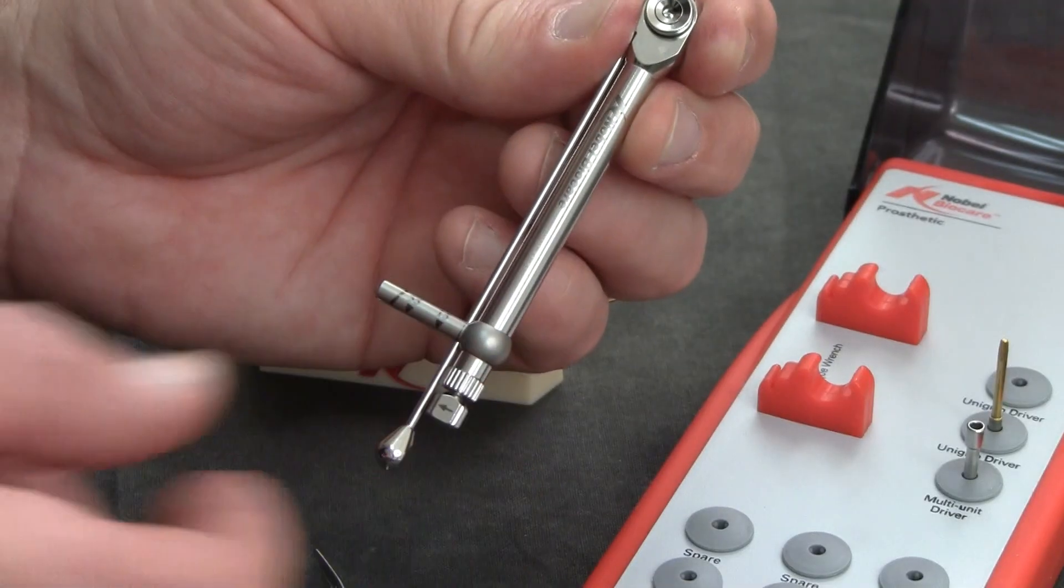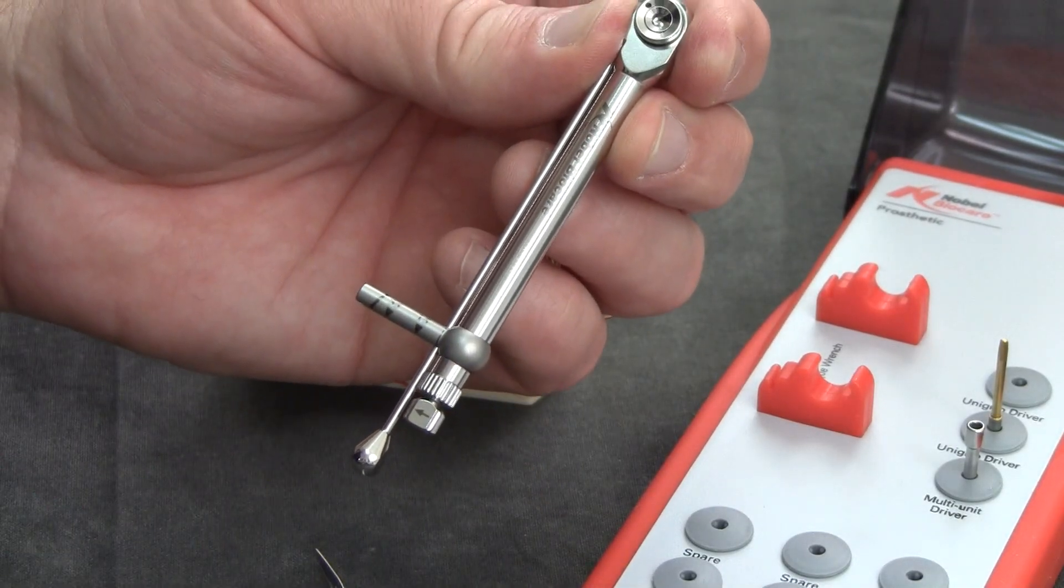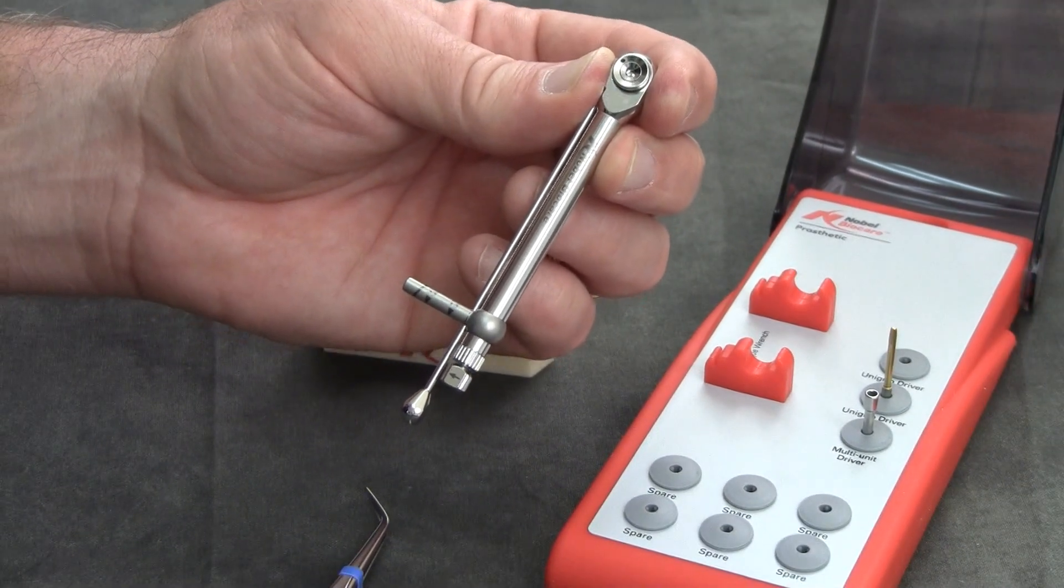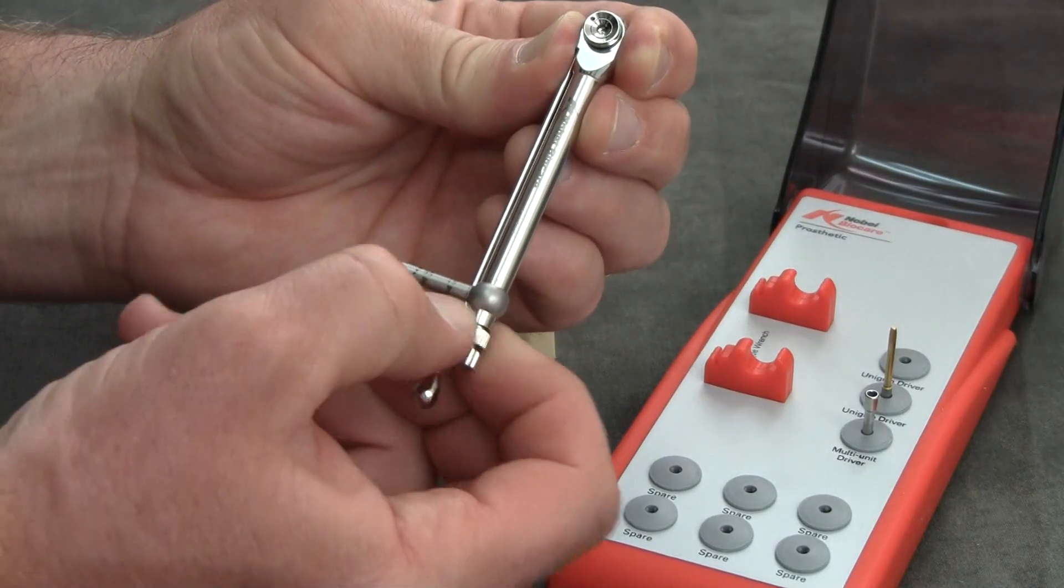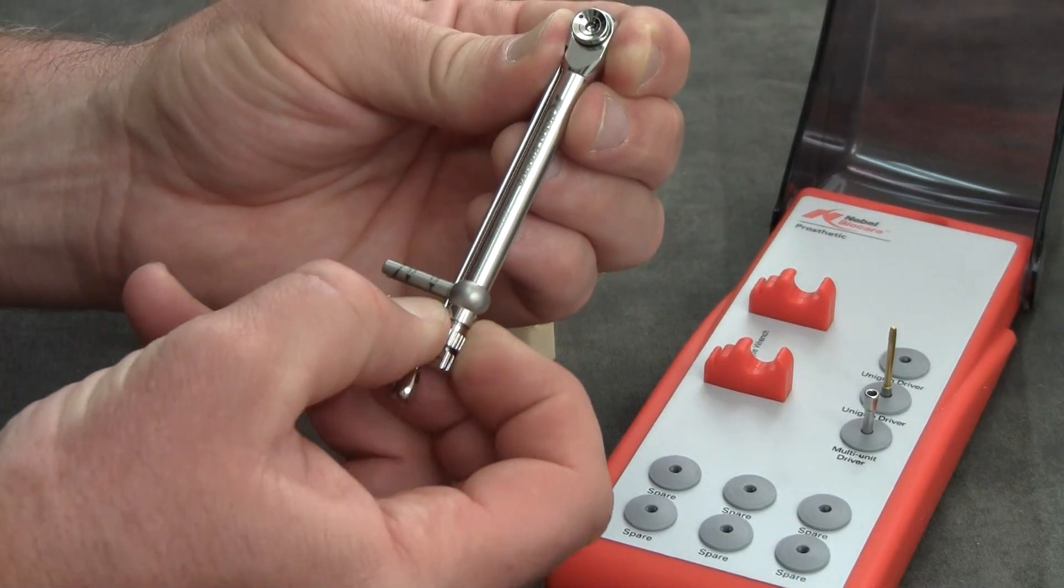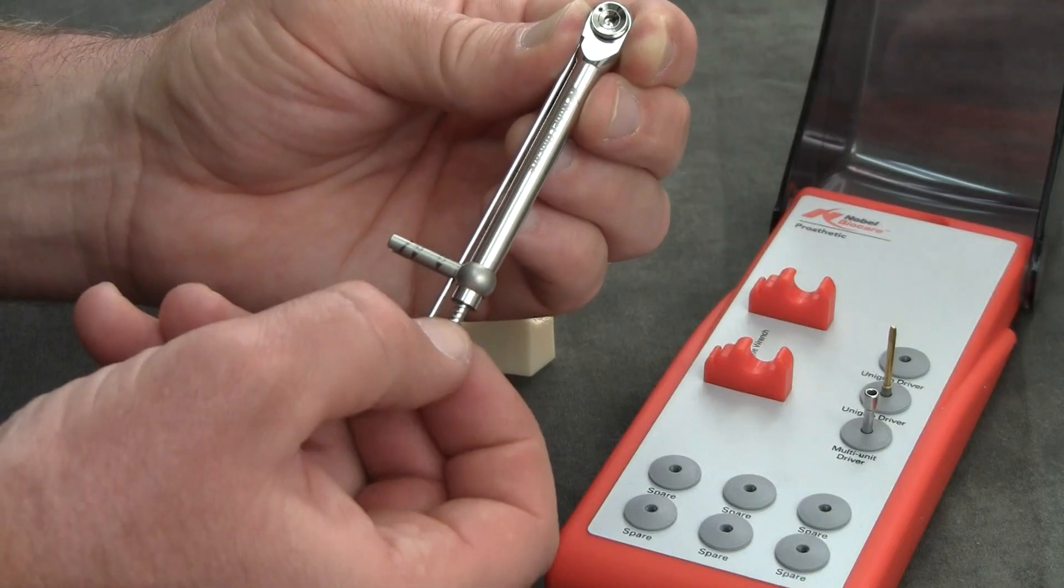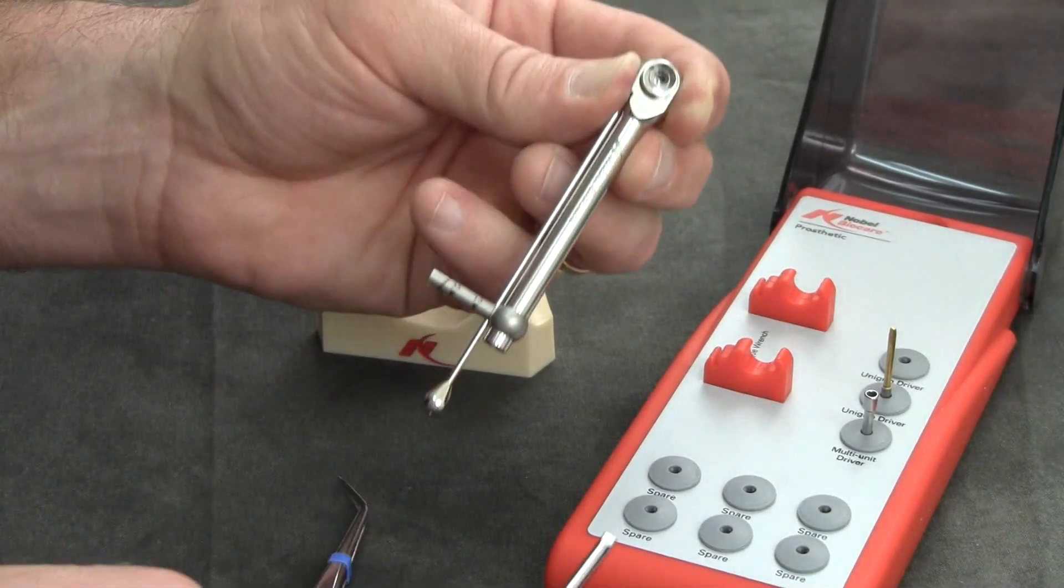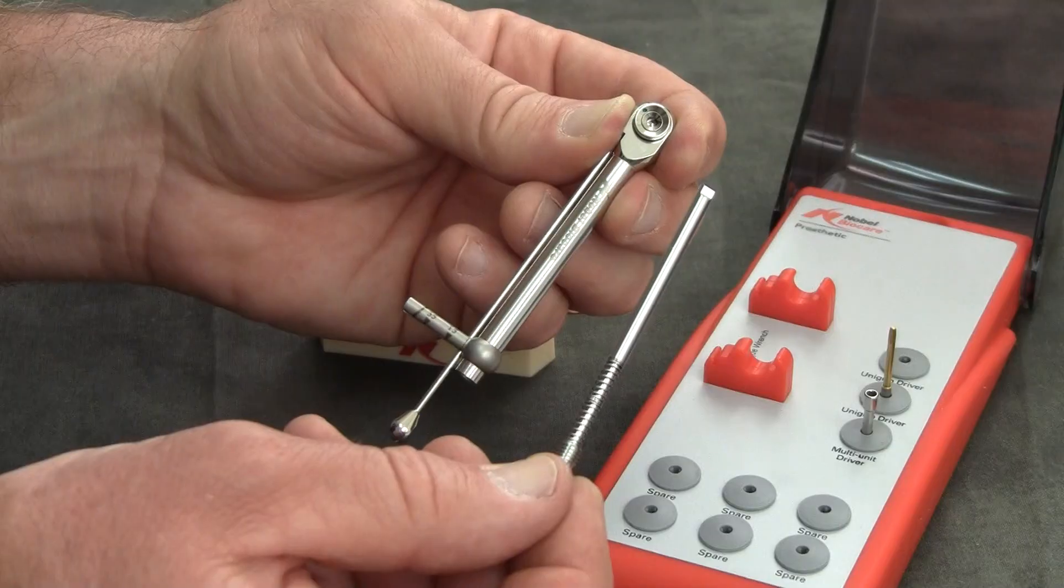When cleaning the torque wrench is necessary, simply unscrew this knob all the way until that central shaft can be pulled out freely, entirely. Thoroughly clean these parts.